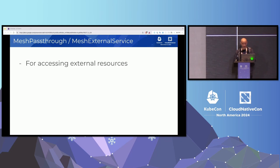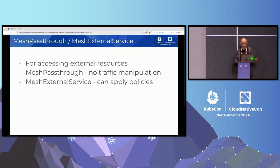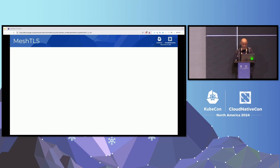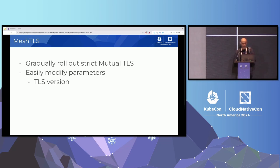The next thing is MeshPassthrough and MeshExternalService. This is for accessing external resources. With MeshPassthrough, there's no traffic manipulation. With MeshExternalService, you can apply policies on top of that. Last but not least, MeshTLS, which allows you to gradually roll out strict TLS mode and modify some of the TLS parameters like version, cipher suites, and mode.